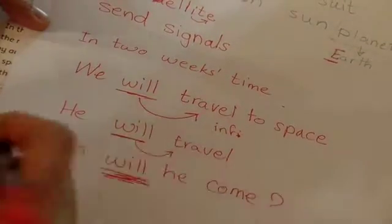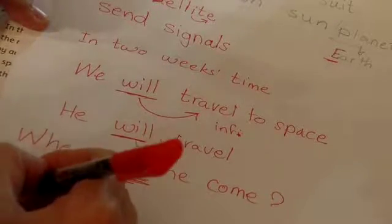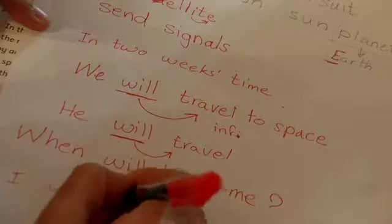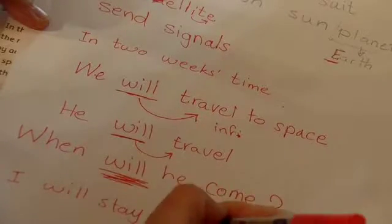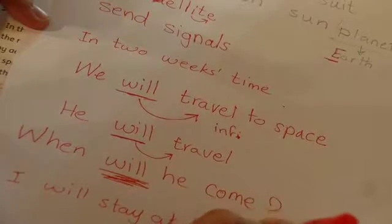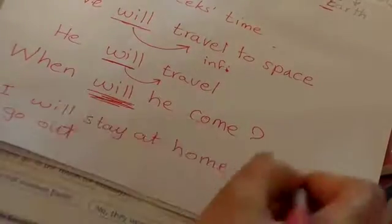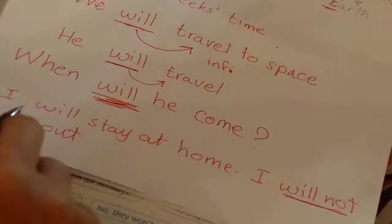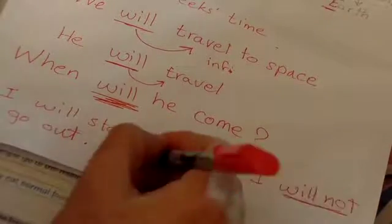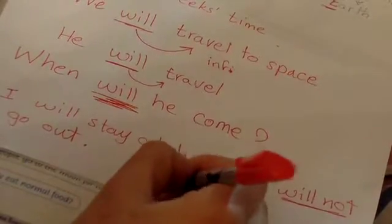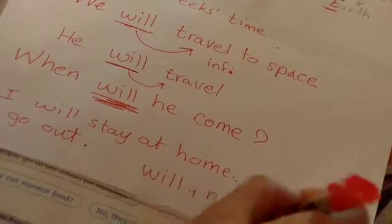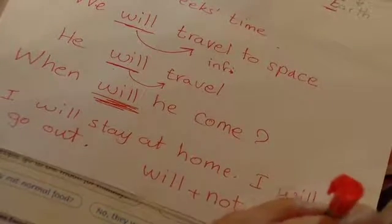Because 'will' is a helping verb, it can carry 'not.' I will stay at home. I will not go out. To negate or make a negative, use 'will not.' Very important: will + not equals 'won't.' When I make the short form, I write W-O-N-T. Take care — it's 'won't.'